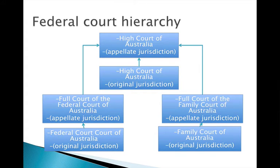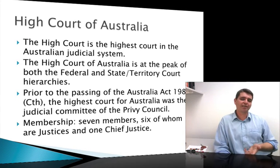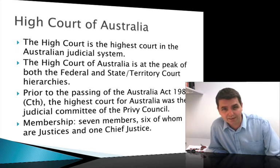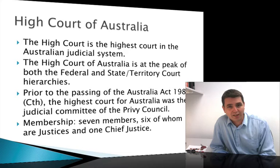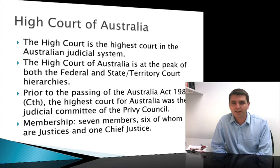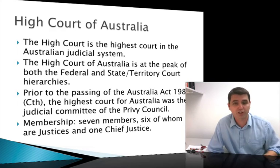The same structure is mirrored for the Family Court of Australia — original jurisdiction, then appeal to the full court, and on to the High Court if leave is granted. The High Court is the highest court in Australia and the ultimate appeal avenue. Prior to 1986, you could appeal from the High Court to the Privy Council in England, but that's no longer available. The High Court is made up of seven justices — six justices and one chief justice — and can hear appeals from any federal courts and any state and territory courts.